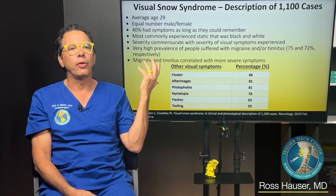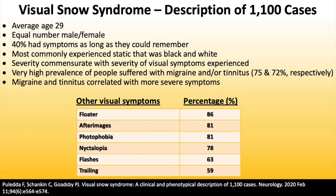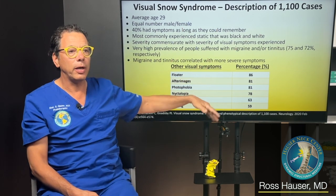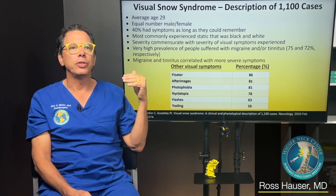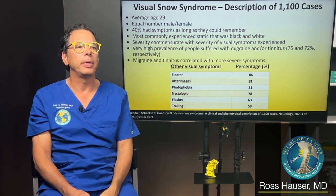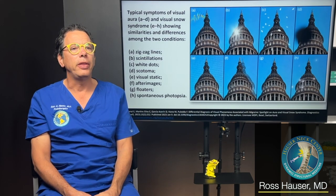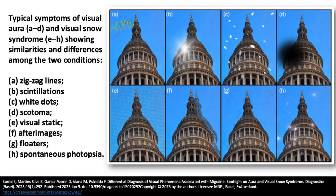Further data from the 1,100 visual snow cases: the average age was 29, 40 percent had symptoms as long as they could remember — meaning from childhood — and they most commonly experienced static. There's a very high prevalence of migraine and aura and tinnitus, and the migraine and tinnitus correlated with more severe symptoms. Various other symptoms related to the eye occur — like flashes, after-images where you look at an image and turn away but still see it, photophobia, and problems with nighttime vision. All these things can occur because of ligamentous cervical instability and are associated with migraines.